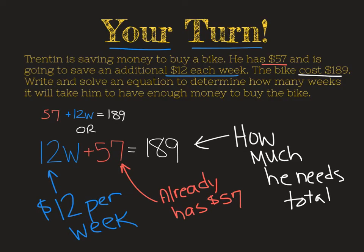All right, there's the equation that I wrote. I have 12 times w plus 57 equals $189. It's $12 each week plus the $57 he already has until he gets to this total of what he needs.